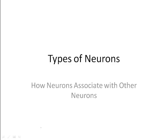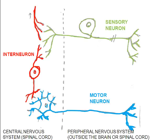Types of neurons and how neurons associate with other neurons. We will look at three types of neurons and how they associate with each other. All three have the same structures arranged differently. Therefore, all can receive and transmit electrical impulses.